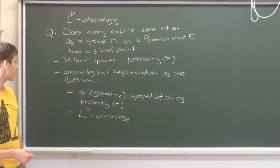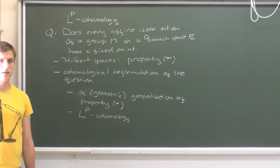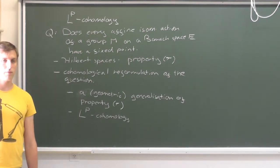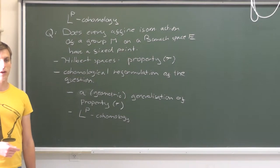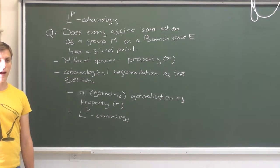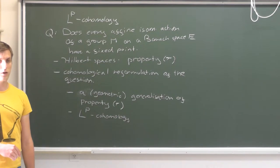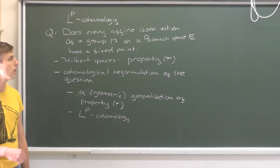So when do you have isometric actions? For example, you could look at uniformly bounded representations, and then you just change the norm, and you will end up with a Banach space where this action is isometric. This allows you to look at uniformly bounded representations, for example.